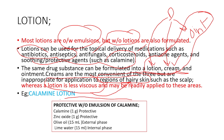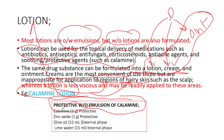An example of a lotion is calamine lotion, which is protective in nature — an oil-in-water kind of emulsion. Calamine is protective in nature. Zinc oxide is also protective in nature. The external phase is oil and the internal phase is lime water.